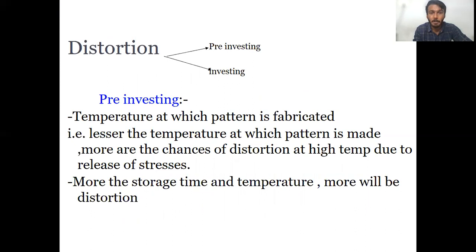Distortion can occur prior to investing (pre-investing) and during the investing procedure. Pre-investing distortion is basically due to the temperature at which the wax pattern is fabricated. A lesser temperature at which the wax pattern is made means more chances that distortion may occur due to internal stress release during an increase in temperature. More storage time and temperature also leads to more distortion.